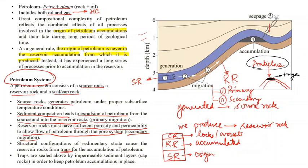The traps are sealed by an impermeable sediment layer, which is known as cap rock. Imagine that from number four — even though it is a trap — if it is not sealed by any other rock and the structural trap is also permeable, then oil may go from there and leak. To prevent that leakage, it is sealed by a cap rock. So number one is source rock, numbers two and three are the reservoir rock, number four is the structural trap, and the blue color here is the cap rock. This is what is called the petroleum system.